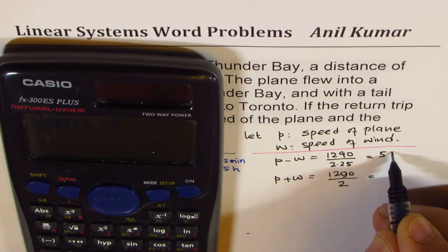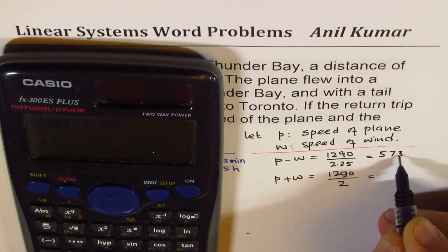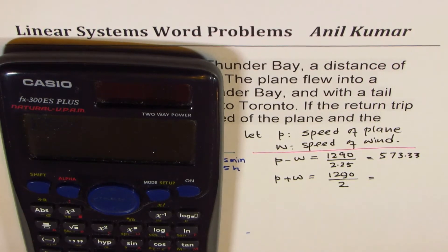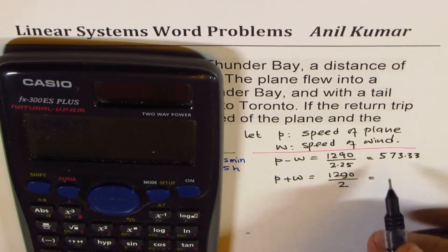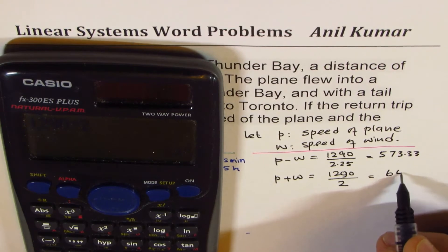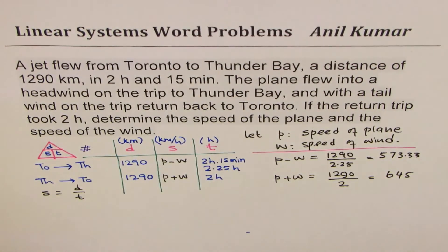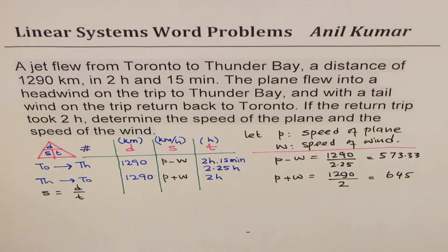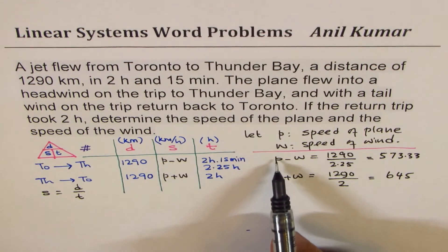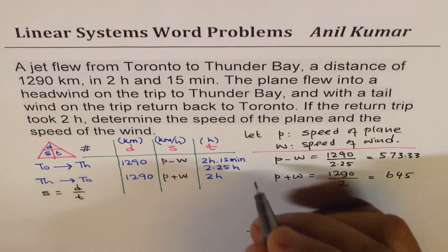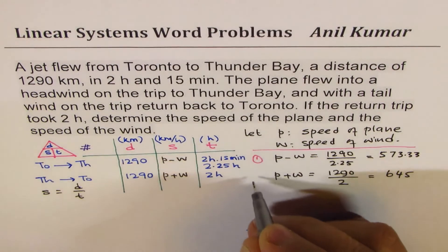We can use a calculator to find these numbers. So 1290 divided by 2.25 gives approximately 573.33 — a recurring decimal. And 1290 divided by 2 gives 645, which is a nice round number. The recurring decimal means our final answers will be approximate. Let's call these Equation 1 and Equation 2.